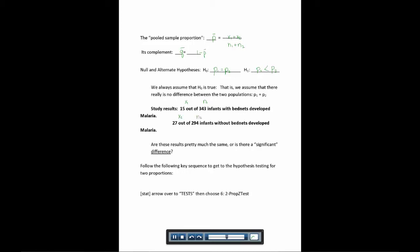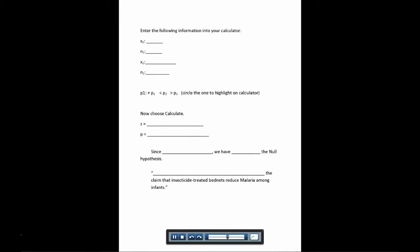So we want to know, are these the same or is there a significant difference? So on your calculator, just like you've been doing for the other hypothesis test, you're going to hit the stat button and go over to tests. And then you'll choose number 6, which is 2 prop Z test.